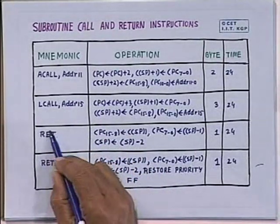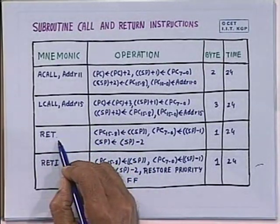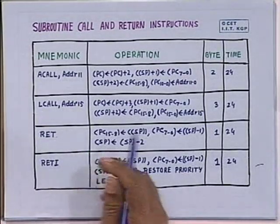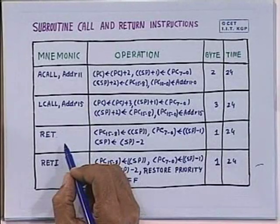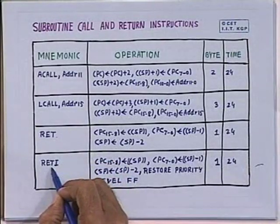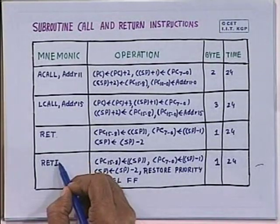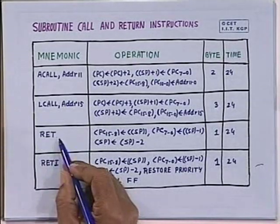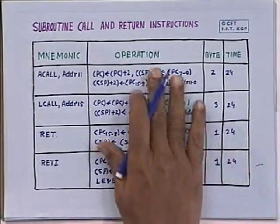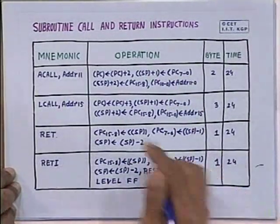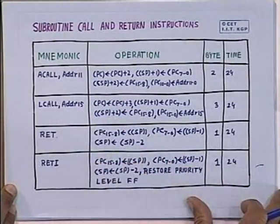These are the two subroutine calls. Associated with subroutines, you have the return instruction RET, which stands for return from subroutine. In the case of interrupts, there is also a jump to an interrupt service subroutine, and there you must use a separate return instruction: RETI, return from interrupt. Why a different instruction is needed we shall explain later. So the 8051 provides 2 subroutine call instructions and 2 return instructions.